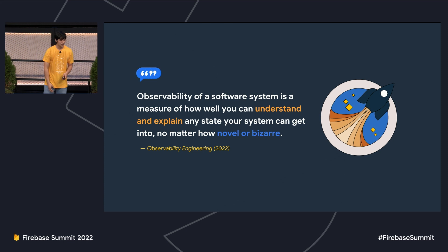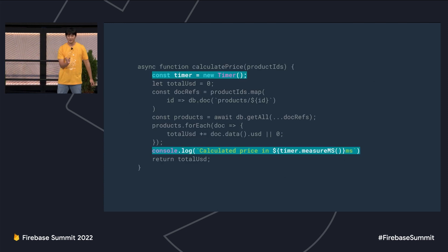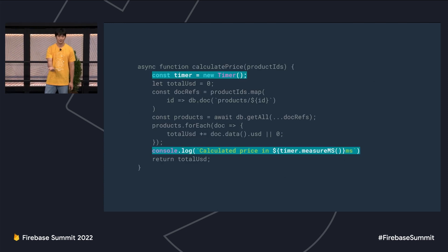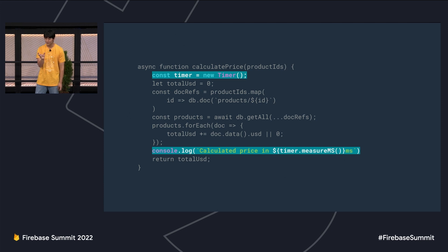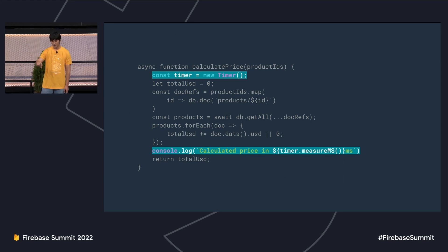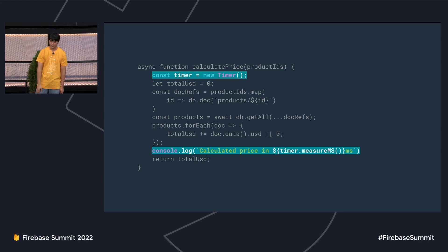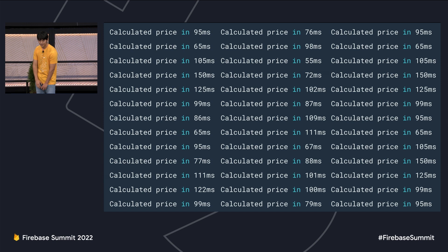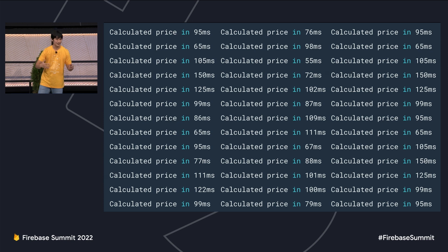So Suna learns about this topic and wants to make her service observable. The easiest place to get started is to write some more logs — we talked about how you write logs to understand how it's running in the software system. She's going to use the handy console.log and time how long it takes to fetch Firestore documents. But with a lot of logs and a lot of requests, it's just a bunch of text — we're not really good at processing megabytes of text and getting insights from it.